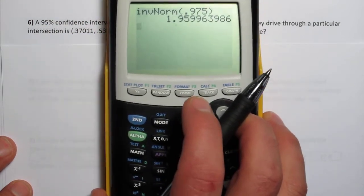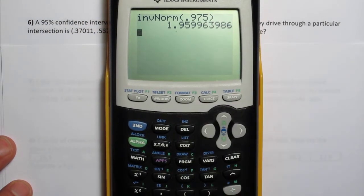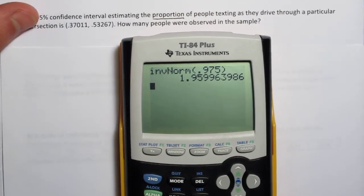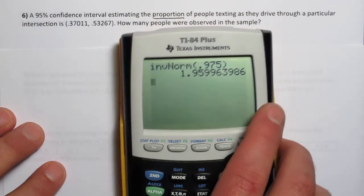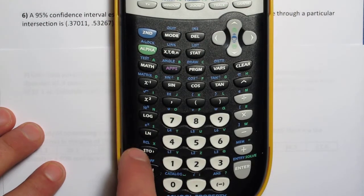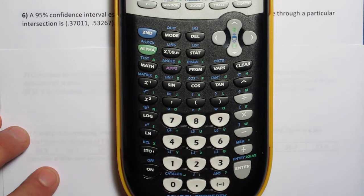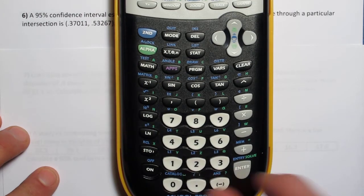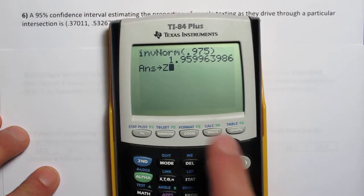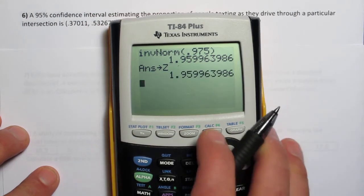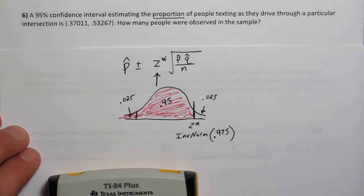What I'm actually going to do, I'm going to store this as z because I don't want to round this value. On sample size problems, rounding often causes errors. So to store it, I'm going to push this STO button here, store, and then press alpha and z. You can store it as any variable you want, but this will store it as z, which makes sense here. Alright, so I've got that piece.